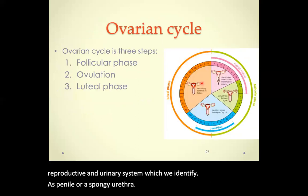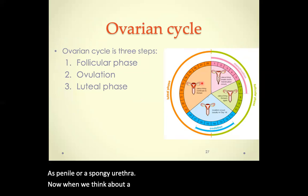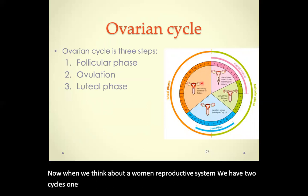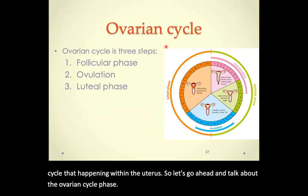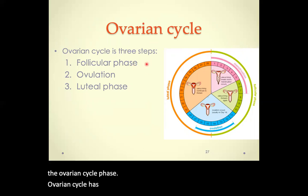When thinking about the female reproductive system, there are two cycles: one occurring within the ovaries and another within the uterus. Let's talk about the ovarian cycle first. The ovarian cycle has three phases: the follicular phase, ovulation, and the luteal phase.